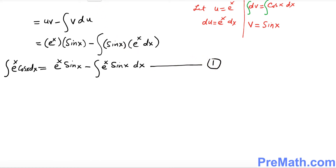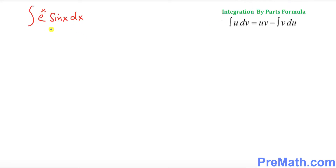Now we need to take care of the integral of e^x·sine(x), and we'll use integration by parts again. I'm going to work this out on a separate page and then return to Equation Number One. I'll call e^x as u and the rest as dv.